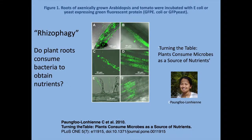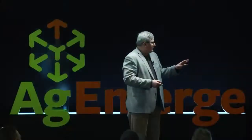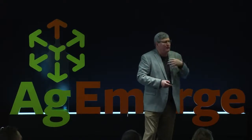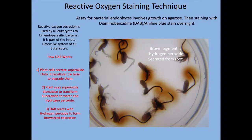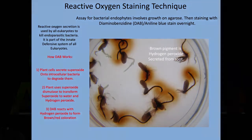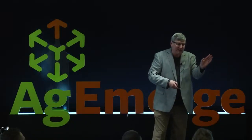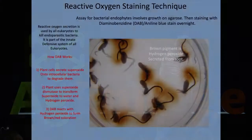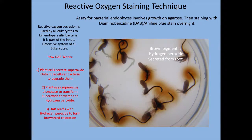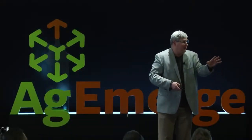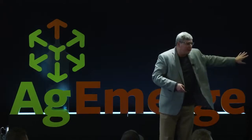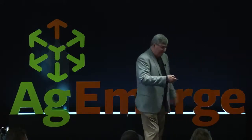They published an article titled 'Turning the Table: Plants Consume Microbes as a Source of Nutrients.' We've been examining that phenomenon for several years now. To visualize these microbes in the plant, we developed a new staining procedure — a reactive oxygen staining technique using a special chemical called DAB, which stains brown wherever reactive oxygen is present. You can see these seedlings in agar, and the brown staining shows where reactive oxygen is present. When these microbes are in the plant, the plant reacts by secreting reactive oxygen onto them, making these microbes visible where before they were almost invisible.